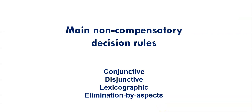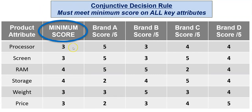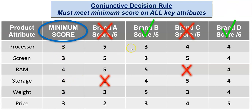Now let's look at the four non-compensatory rules. Starting with the conjunctive decision rule — we expect the product to meet a minimum score on all key attributes; they all combine together. We set up a minimum score for every attribute and work through to make sure each brand meets them all. Brand C scores less than four on RAM, so it's ruled out. Brand A scores less than four on storage, so it's ruled out. The rest meet the minimums, leaving us with two suitable brands: brand D or brand B.